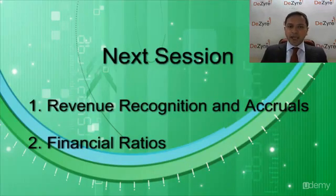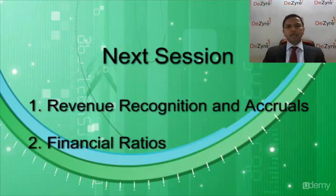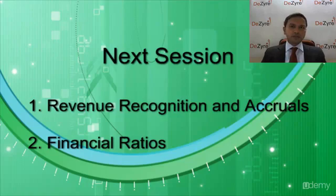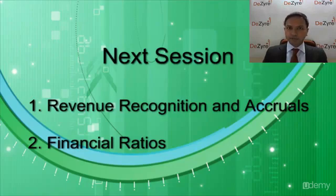Hopefully you now have a fairly good understanding of what an income statement is all about — the different components, why it's used, the different terminologies, and how to build a basic income statement. In the next session, we'll stay with the income statement but cover special scenarios in revenues and expenses, including revenue recognition, accrual accounting, and cash accounting. We'll also focus on financial ratios that help you analyze an income statement and make intelligent decisions on the operating efficiencies of a company.